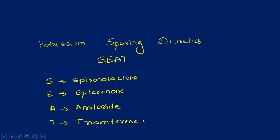So you can also remember the group of actions which are produced by each of these drugs. So spironolactone and eplerenone have a common mechanism. So you can remember that S and E produce this action, that is aldosterone antagonist.